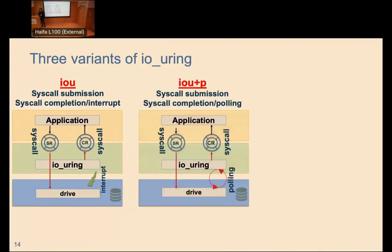The second variant, io_uring+P, is very similar to the previous one, but instead of using interrupts to be notified about the completion of an IO request, it uses polling — continuously polling the drive to understand when a request has been completed.